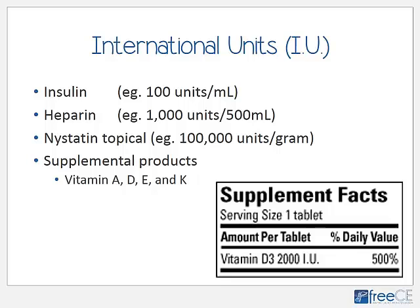Products measured in international units will not necessarily weigh the same amount even if they have the same number of units. For example, 100 units of insulin will not actually weigh the same as 100 units of vitamin A. When you're measuring mass, however, it's constant — 100 grams of chicken and 100 grams of marshmallows weigh the same amount even though they're completely different things.